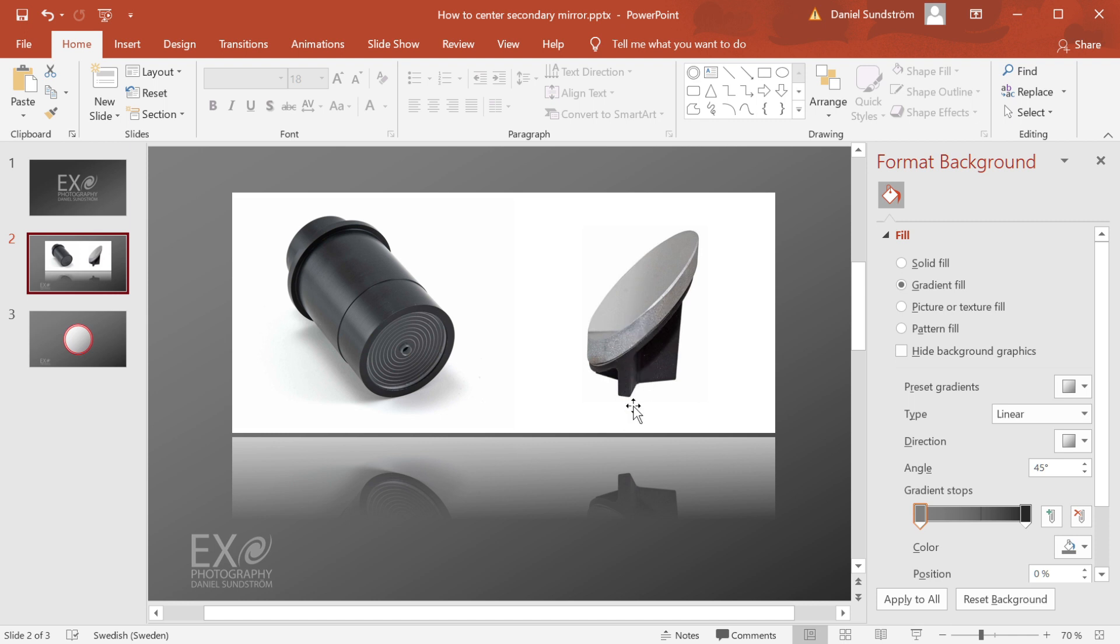It's mounted, if you can see here, the threads that go through the secondary holder is right here. And you can see that the mirror is shifted. In all cases where the secondary is mounted with an offset, the offset is pointing in the opposite way from the focuser.